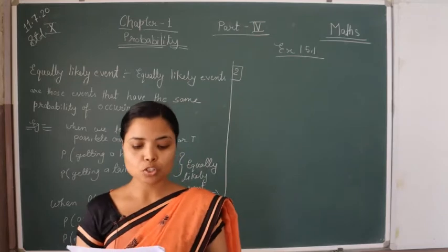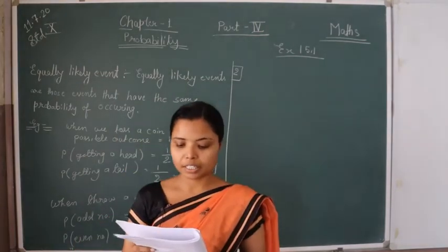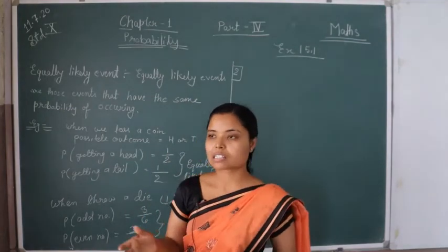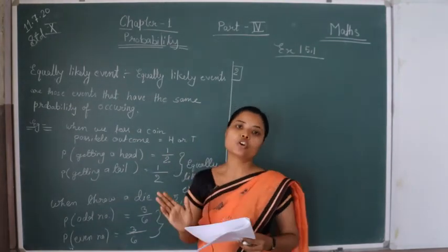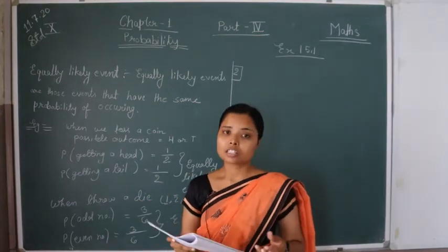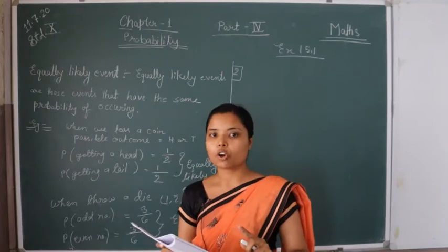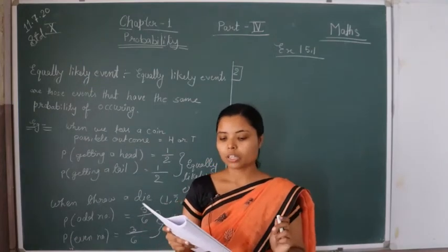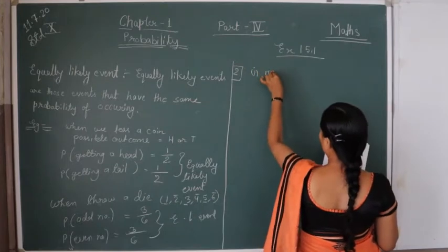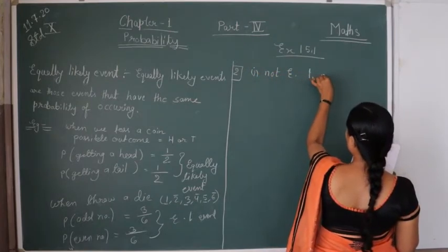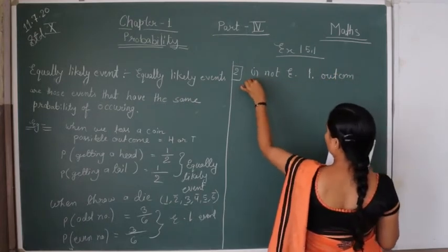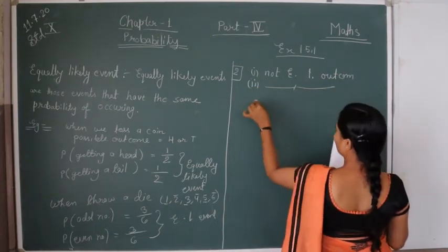Second: a player attempts to shoot a basketball — he shoots or misses the shot. This is also not an equally likely event because it also depends on the ability of the player. So the first one is not equally likely and the second is also not equally likely.